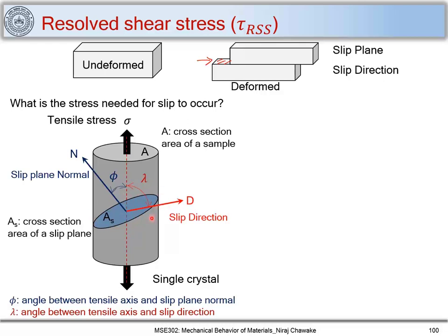This is how we define our slip system. We have an applied stress sigma, and our aim is to find out what stress is required to cause slip on this plane with respect to the applied tensile stress. First, we find the tensile force F acting on area A, which is given as F = sigma × A.